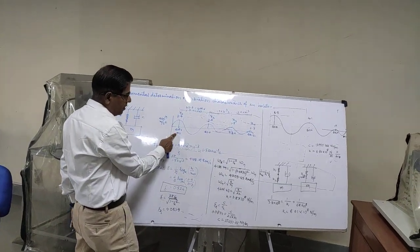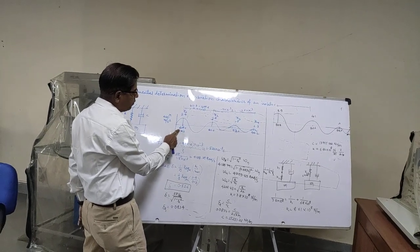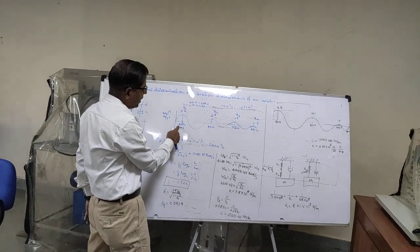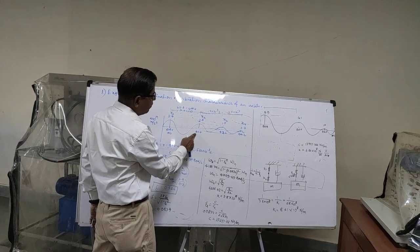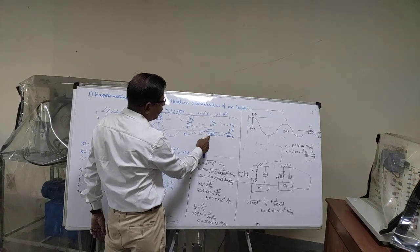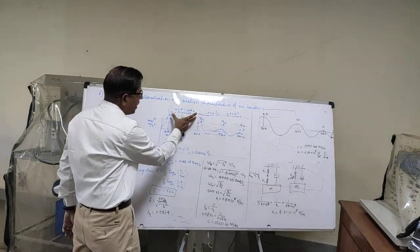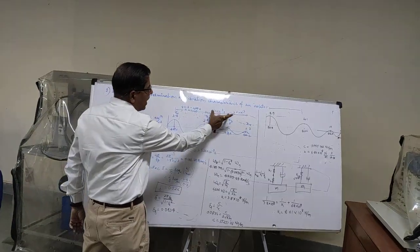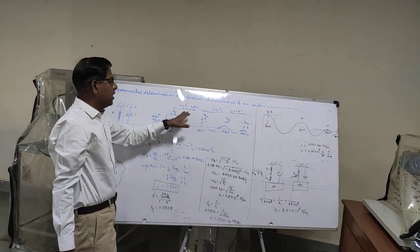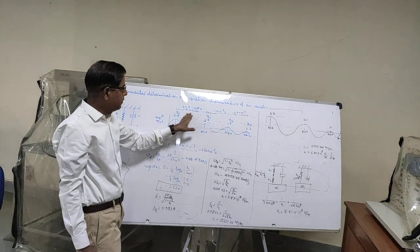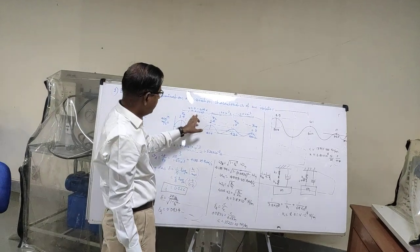The time readings are also noted: 4.09, 4.09.6, 4.11.7, 4.13.6, and 4.14.2. That means we are calculating the time period between two successive peaks to calculate the damped natural frequency of the system. In this way we have plotted the values from the experimental readings.